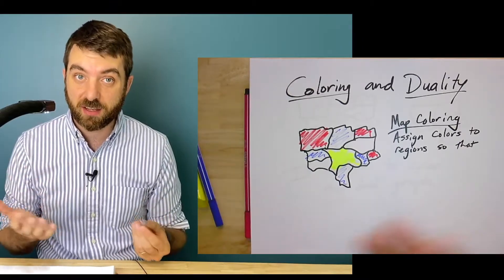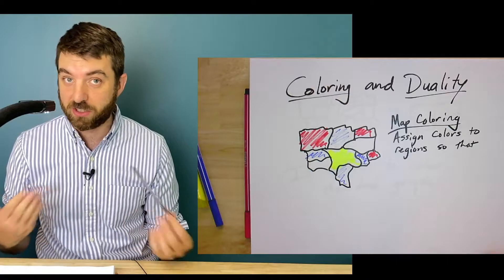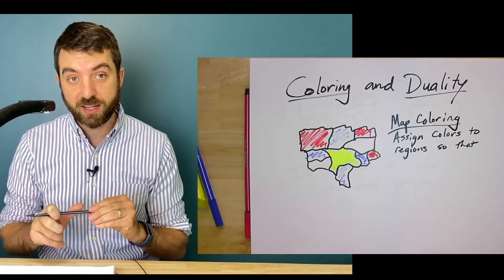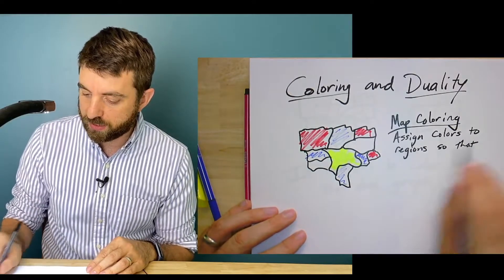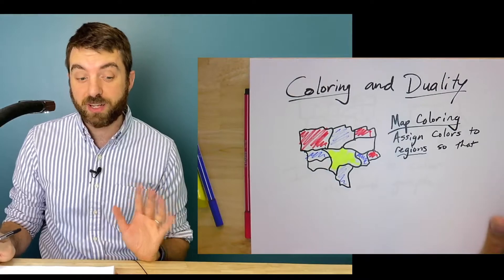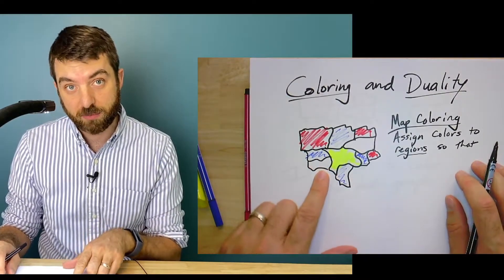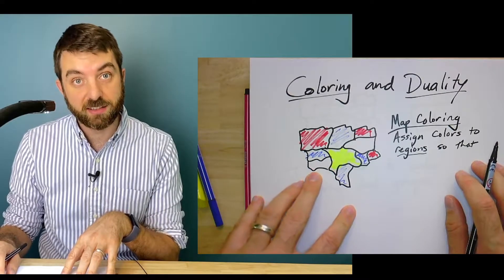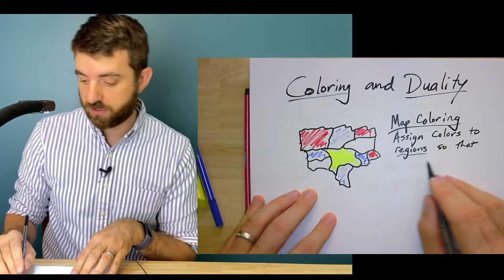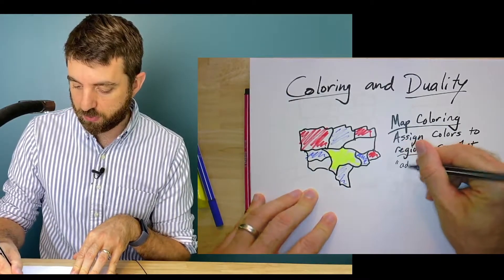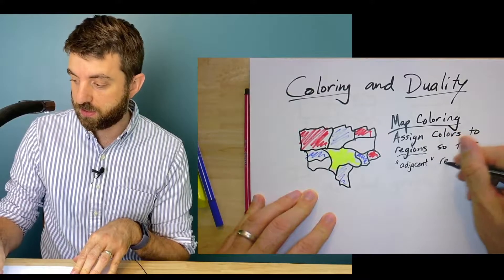Superficially, it feels like the graph coloring problem, where I'm assigning colors to things and adjacent things should have different colors. But what exactly are those things, and what exactly is the graph? I want to assign colors to the regions here. We actually have another name for those, because if this is an embedding of a graph in black, then the regions are the faces of the embedding. So I'm going to assign colors to the regions so that — we'll say exactly what it means in a second — adjacent regions have different colors.